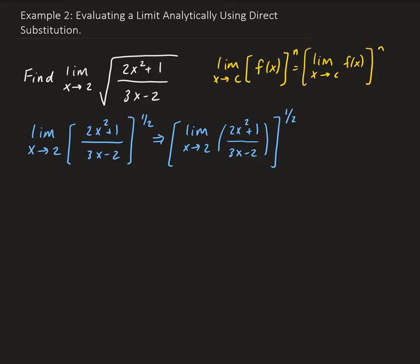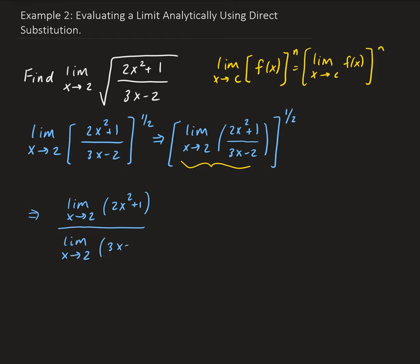And then, using another property of limits, we can split this up — we have the limit of the ratio. So we can take the limit of the top part and divide by the limit of the bottom part, and all that is going to be raised to the 1/2. So we have the limit as x approaches 2 of 2x squared plus 1, divided by the limit as x approaches 2 of 3x minus 2, all raised to the power of 1/2.